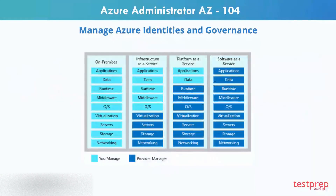Cloud computing resources are delivered using three different service models: Infrastructure as a Service, Platform as a Service, and Software as a Service.